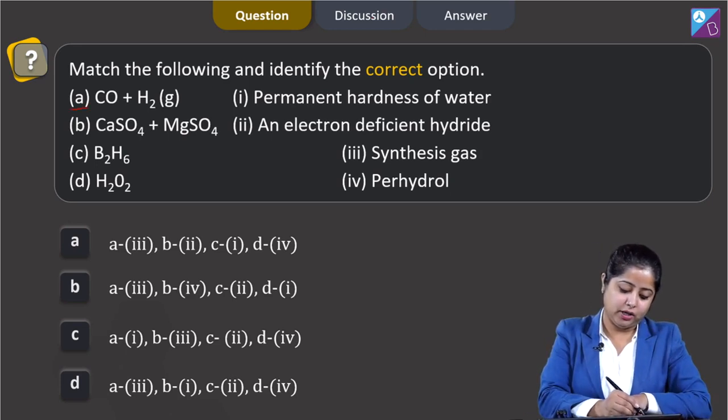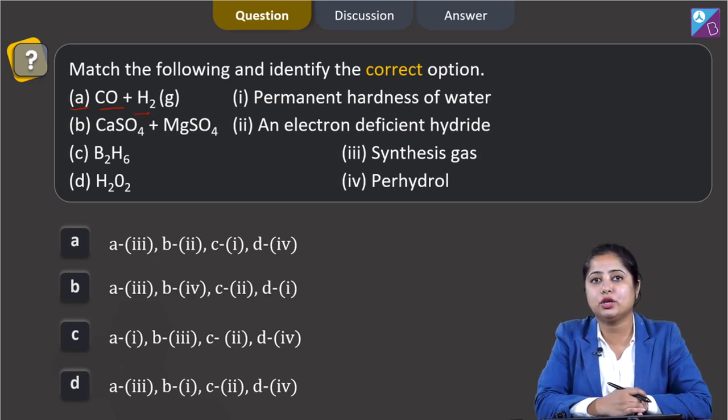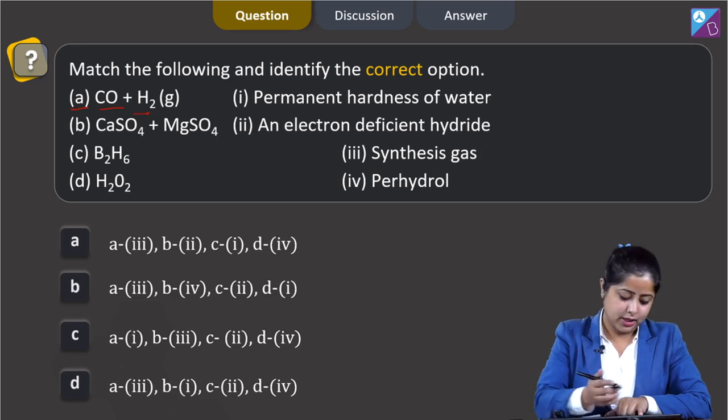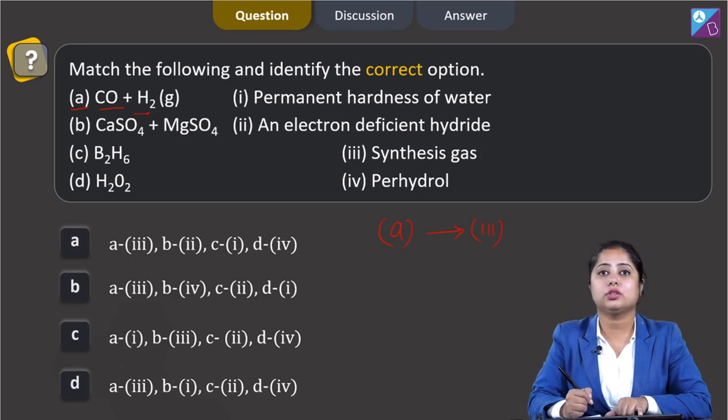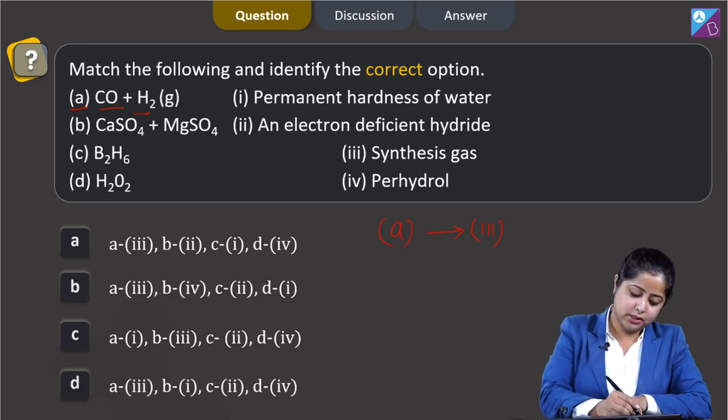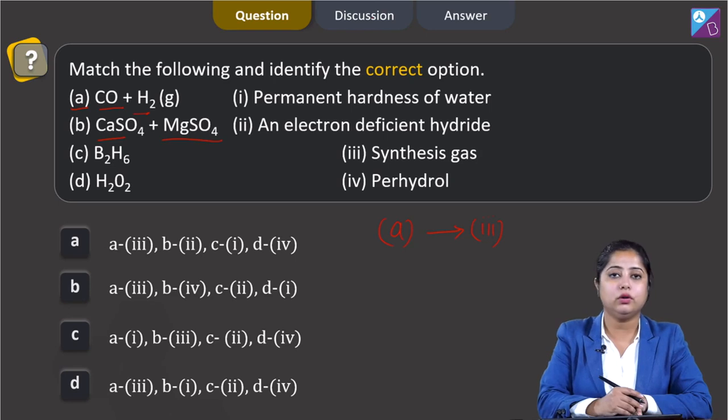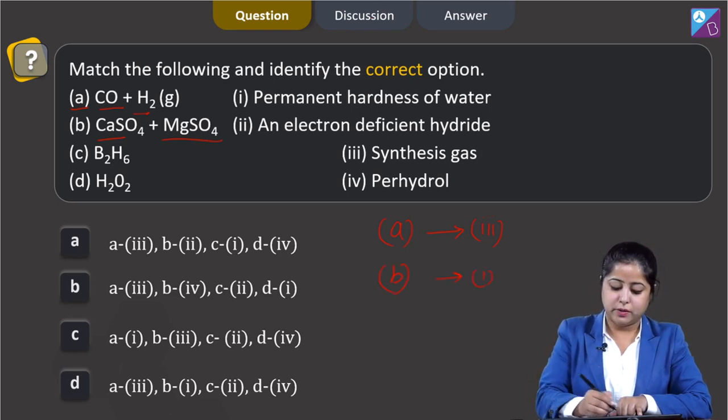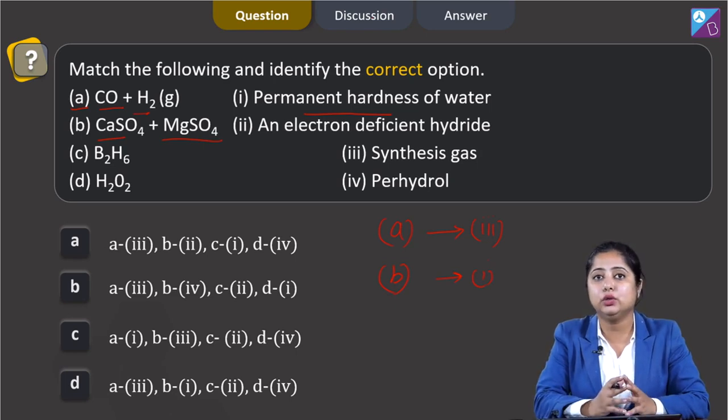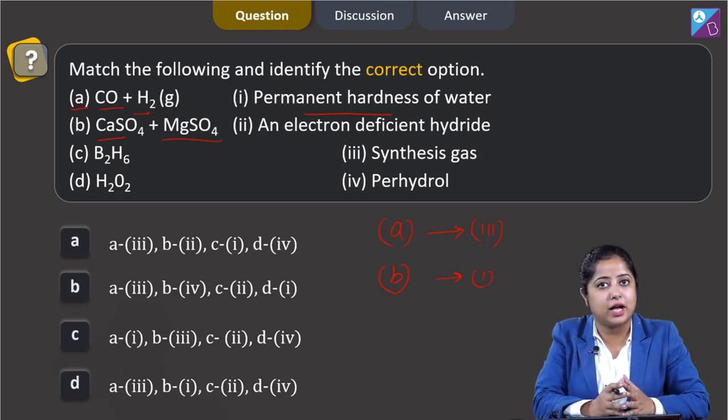In A, we are given with CO and H2. Since the mixture of CO and H2 is known as synthesis gas, A has a match 3. Moving to next, CaSO4 and MgSO4. B has a match 1, since permanent hardness of water is due to the soluble salts of calcium and magnesium in the form of chlorides or sulphates.